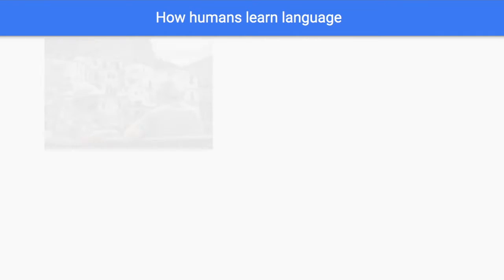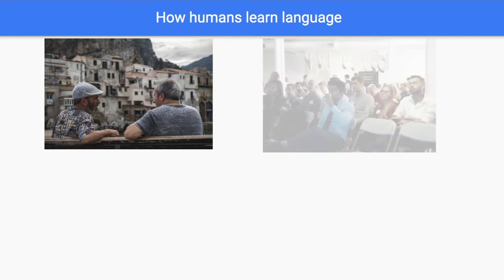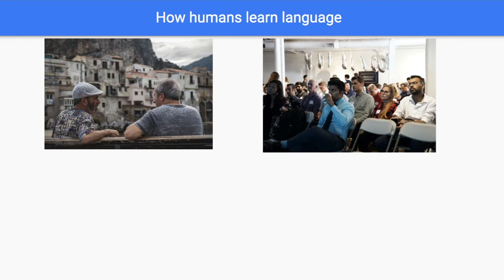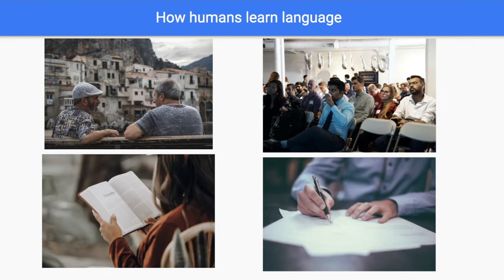Let's take a look at how humans learn languages. Humans talk to each other — talking to other people helps us understand words and language more. We listen to other people, which is especially important for baby toddlers, because they basically learn languages first by passively listening to their parents a lot. We also read when we know how to read, and we also write. So these are four basic components of human language learning, but definitely there are more.